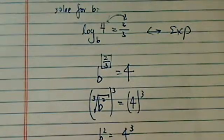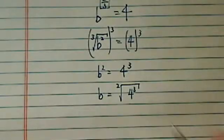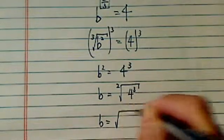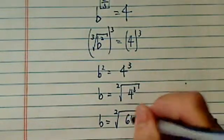And then b is equal to square root of 4 cubed. And in our case, b is equal to, that's 16, 64.